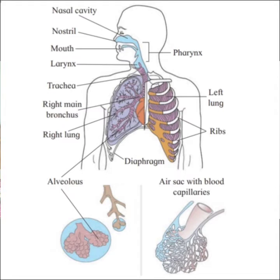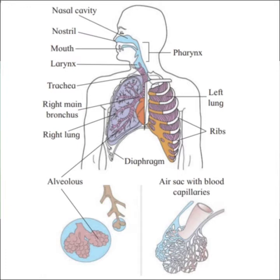The next part is the trachea. It is a tubular structure about 10 to 12 centimeters long. It runs through the neck region in front of the esophagus up to the middle of the thoracic cavity. It is supported by C-shaped incomplete cartilaginous rings which prevent the trachea from collapsing. It is lined by ciliated pseudostratified epithelium and mucous glands which trap unwanted particles and prevent their entry into the lungs.